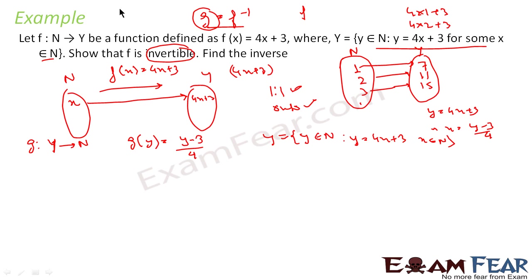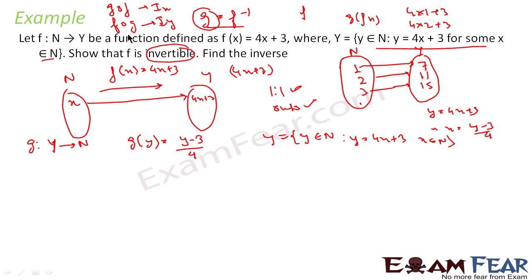Once g is defined, let us find gof and fog. If we can show that gof = I_N and fog = I_Y, then the function is invertible and g is the inverse. Note: gof is always I_X and fog is always I_Y. The output of g(f(x)) is in the form of x, so it is I_X, and f(g(y)) gives output in the form of y, so it is I_Y.